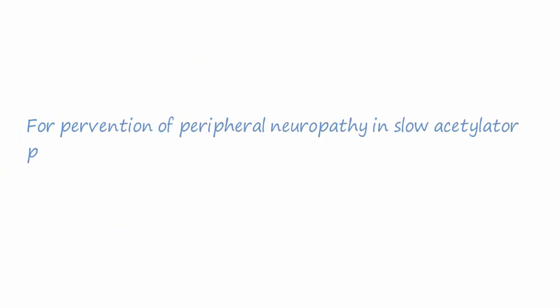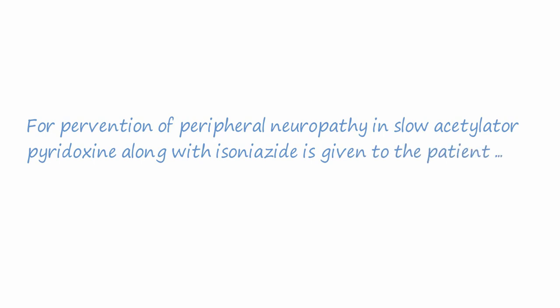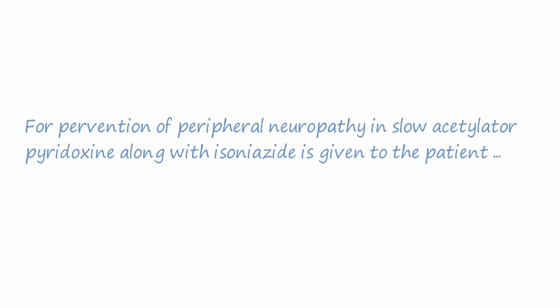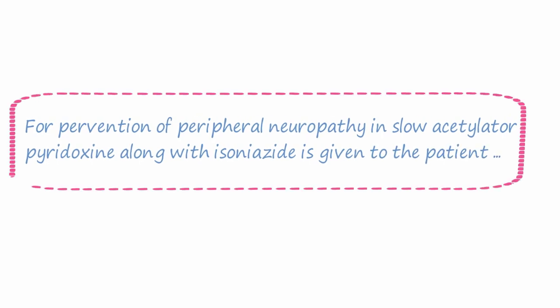For prevention of peripheral neuropathy in slow acetylators, pyridoxine is given along with isoniazid to the patient.